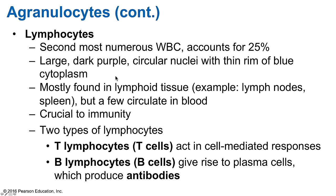Lymphocytes range in size from small to large. Small cells are 5–8 micrometers in diameter, medium cells are 10–12 micrometers, and large cells are 14–17 micrometers. During acute viral infections and some immunodeficiency disorders, we see an increase in the large cells. The majority of lymphocytes reside in lymph tissue — you have a high concentration in the spleen and lymph nodes, where they are key players in immunity.